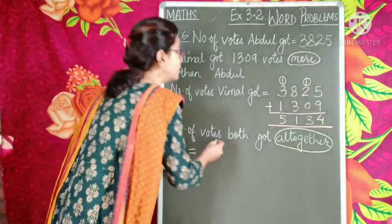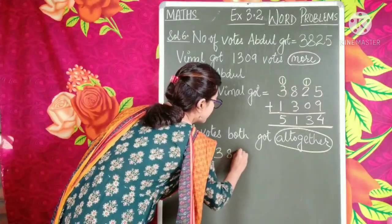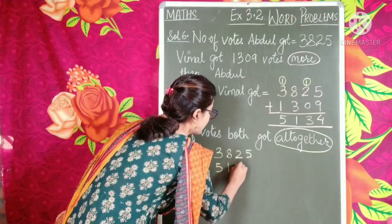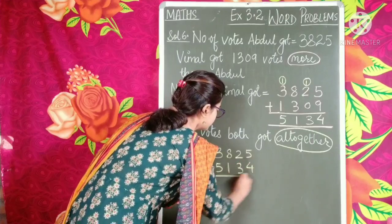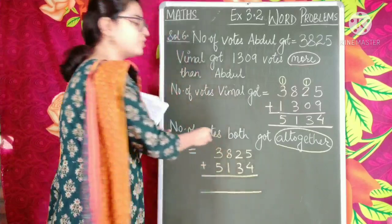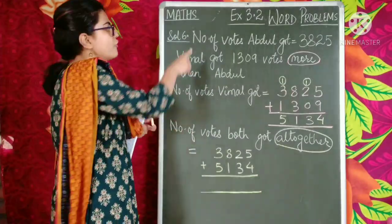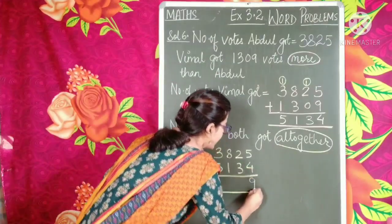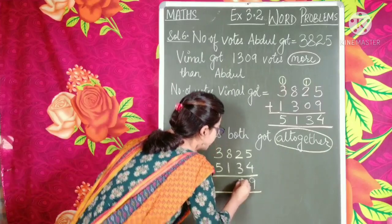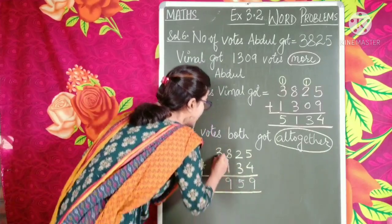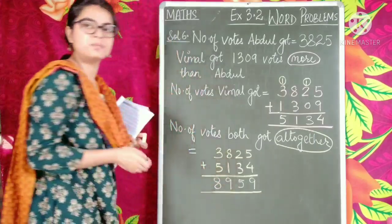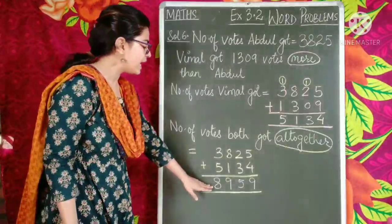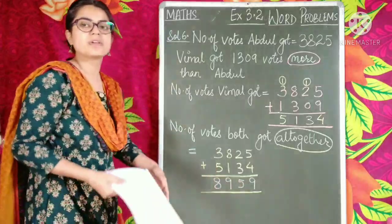So we write here 3,825 plus 5,134. After adding this, we will get the number of votes which both the candidates got altogether. 5 plus 4 is 9. 2 plus 3 is 5. 8 plus 1 is 9. 3 plus 5 is 8. Very simple addition. So the number of votes that both got altogether is 8,959.